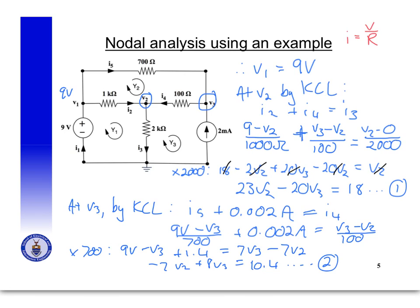We now have two equations with two unknowns, V2 and V3. Solving the simultaneous equations gives V2 = 8 volts and V3 = 8.3 volts. That is the end of this clip.